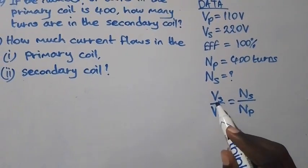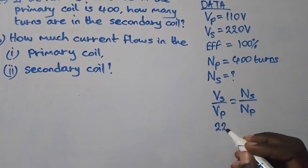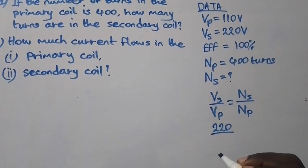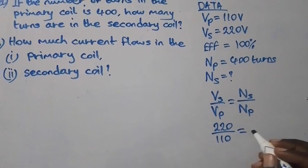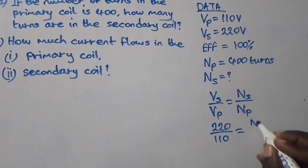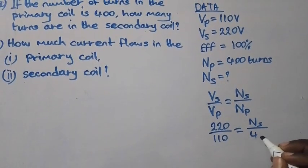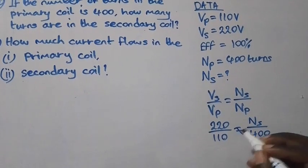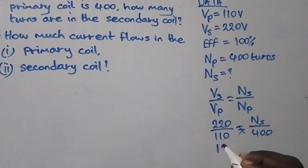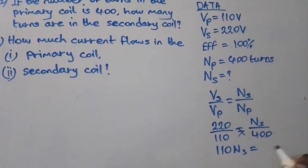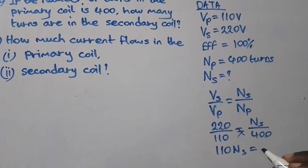So VS is 220 over VP which is 110, equal to NS, our subject, over NP which is 400. We cross multiply: NS times 110 equals 110NS. This equals 220 times 400 which is 88000.